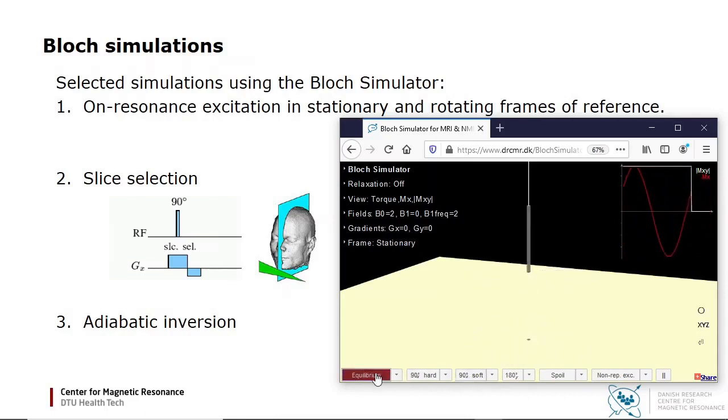Let's see it again. I start in equilibrium, and apply an oscillating B1 field sufficiently long to rotate the magnetization 90 degrees.